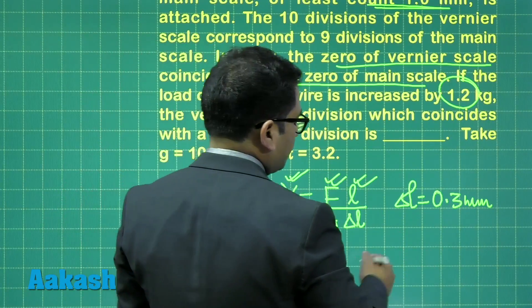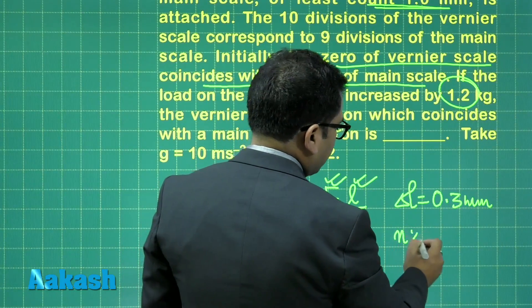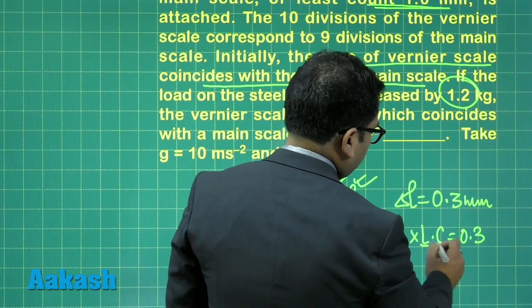So the direct reading would be number of vernier scale coinciding multiplied by least count is going to be 0.3. This is 0.1.